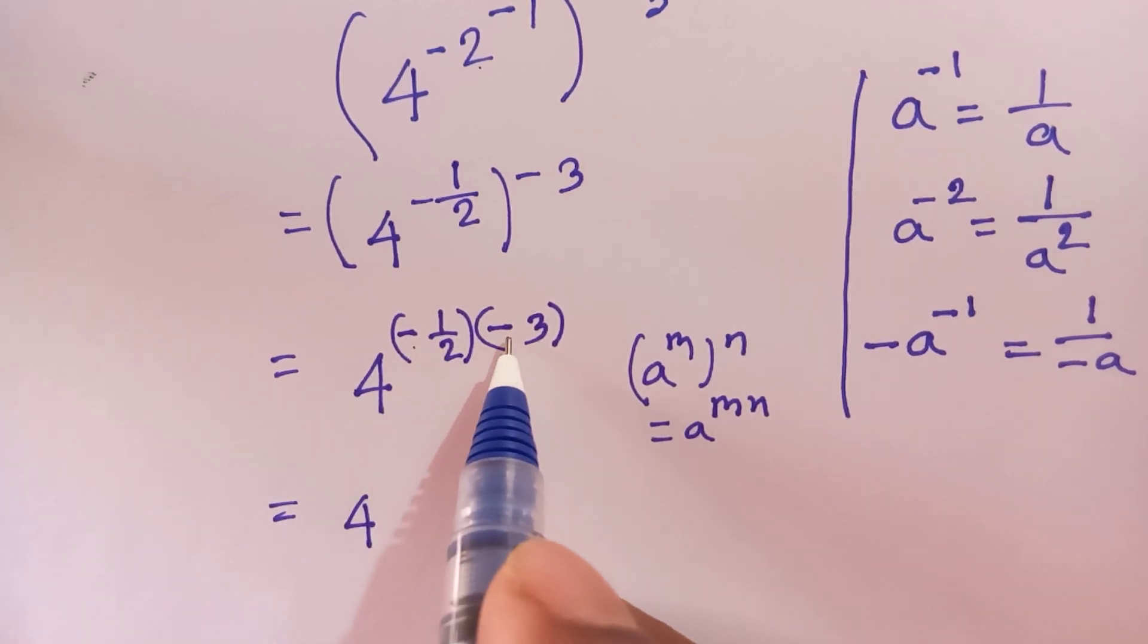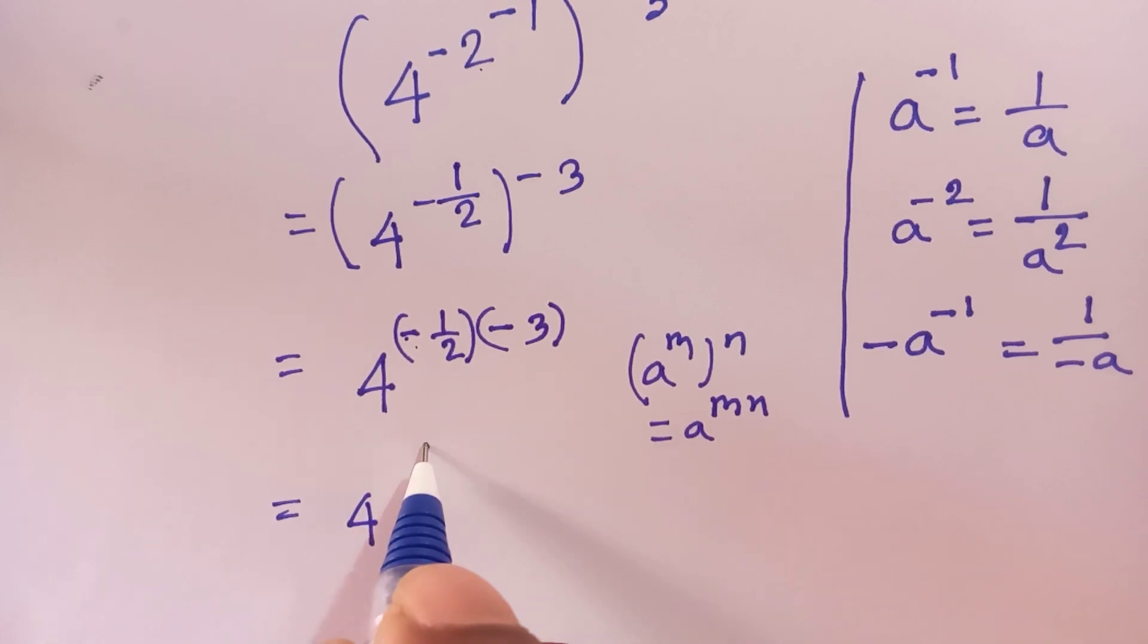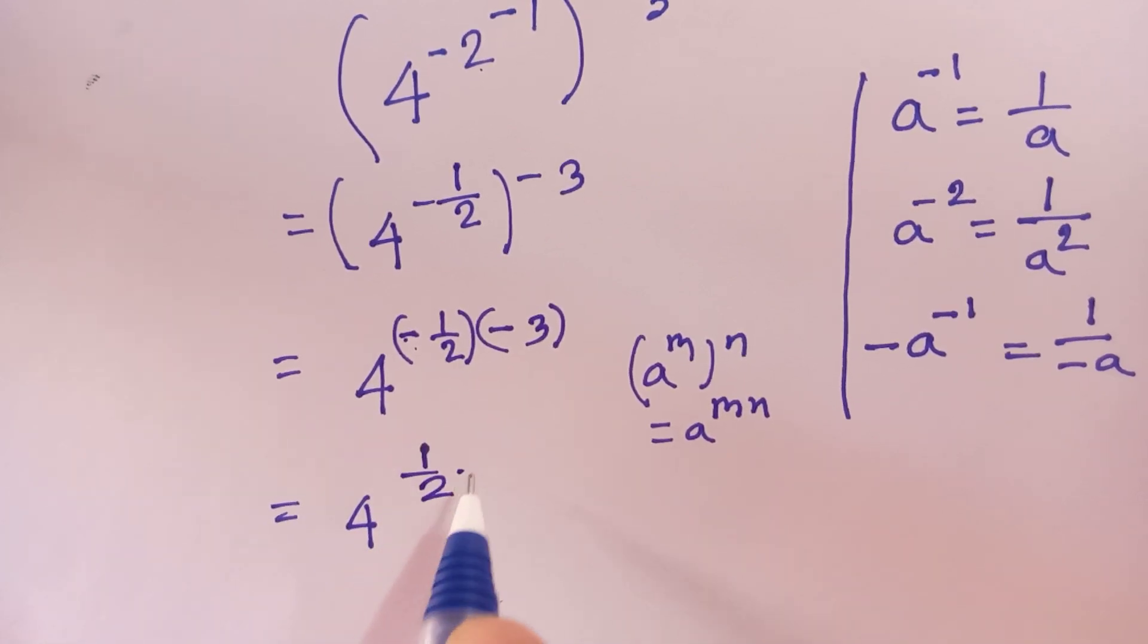multiply by this, so it will be minus times minus, it will be positive, and 1/2 times 3.